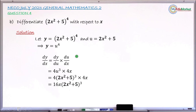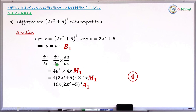For the NECO 2023 marking scheme, the first mark (B1) is awarded for rewriting y in terms of u. The next mark (M1) is for correctly finding dy/du and du/dx. Another method mark (M1) is given for substituting u back and attempting to simplify. The final accuracy mark (A1) is for the correct answer: 16x(2x² + 5)³. This question carries 4 marks in total.